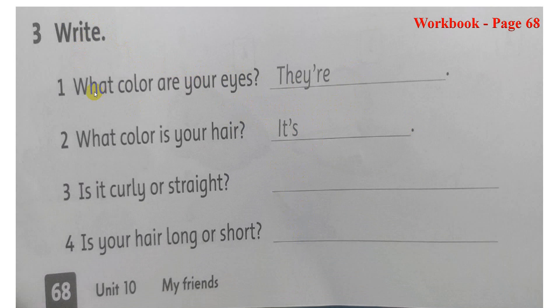For example, what color are your eyes? Mắt của bạn màu gì? À, các con vừa thấy bức tranh mẫu. Cô vừa tô màu mắt của bạn ấy là màu đen đúng không ạ? Vậy chúng ta sẽ trả lời là they are black. Ok, they are black. Chúng có màu đen.